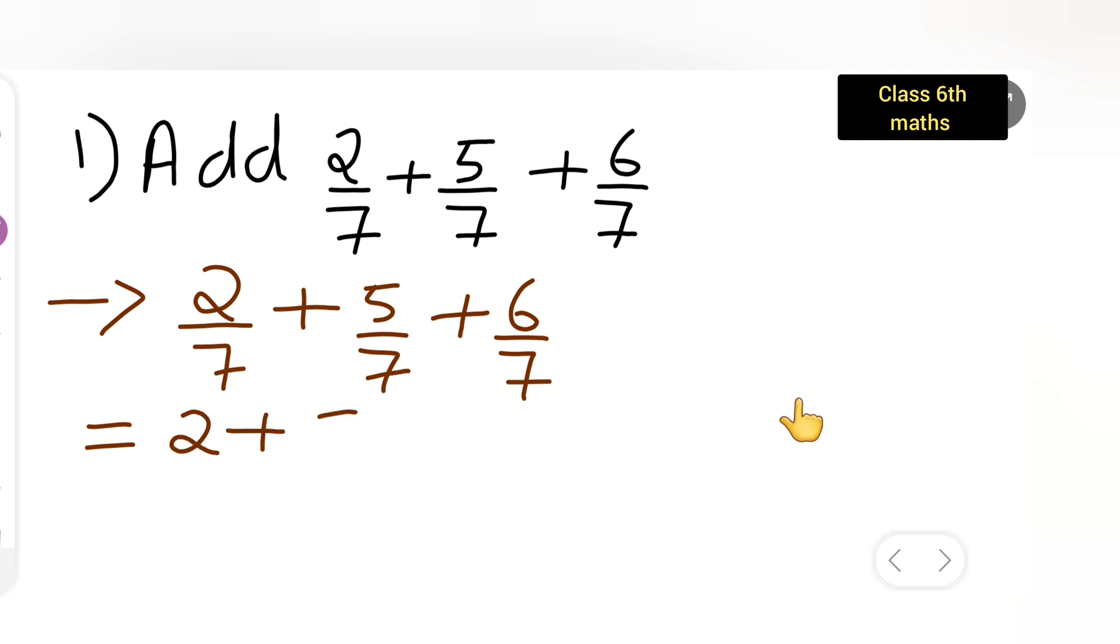2 plus 5 plus 6, and you'll have to put upon 7 as it is.